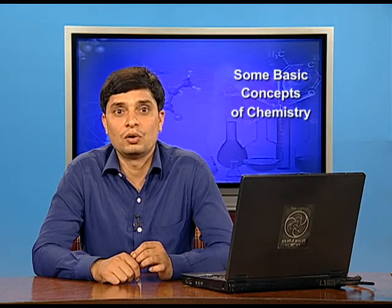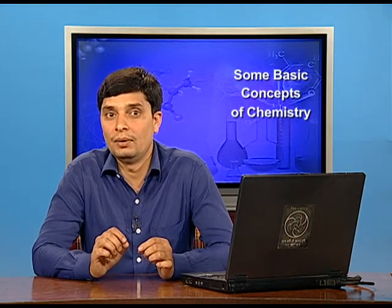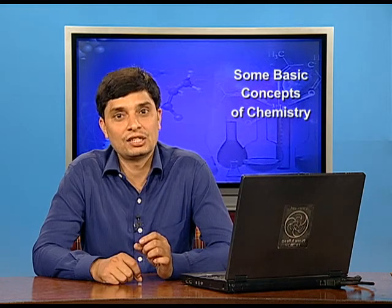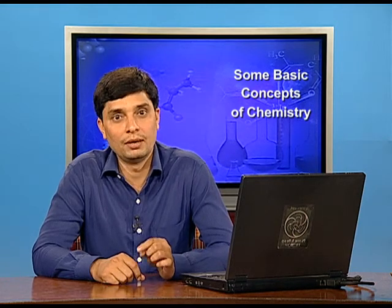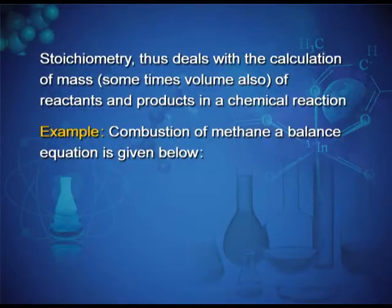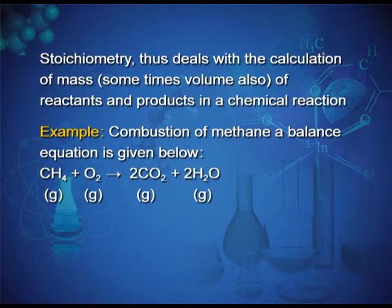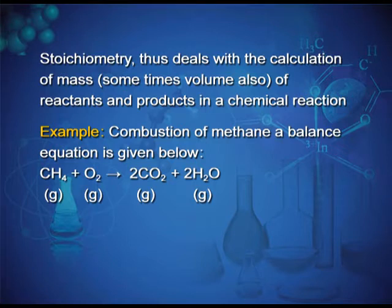Let us look at what information is available from the balanced chemical equation of a given reaction. For example, the combustion of methane — a balanced equation is given below: CH₄ + 2O₂ → CO₂ + 2H₂O. In this reaction, methane, oxygen, carbon dioxide, and water are all present in gaseous form, as indicated by the letter (g).